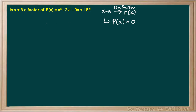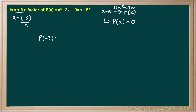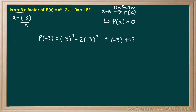So how do we apply that in this case? First we have to convert our divisor to the form of x minus a. So x plus 3 can be rewritten as x minus negative 3, so our a value is negative 3. Now we have to evaluate p of a, or p of negative 3, to see if it's 0. Substituting negative 3 in for all the x's leaves us with negative 3 cubed minus 2 times negative 3 squared minus 9 times negative 3 plus 18.